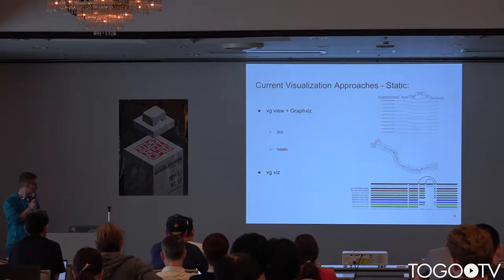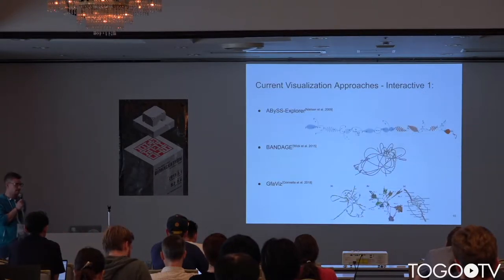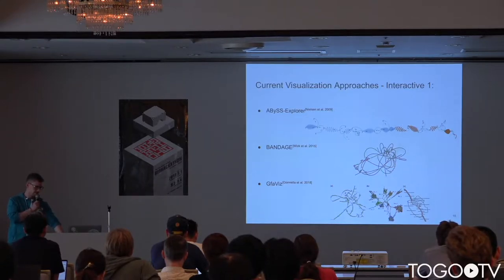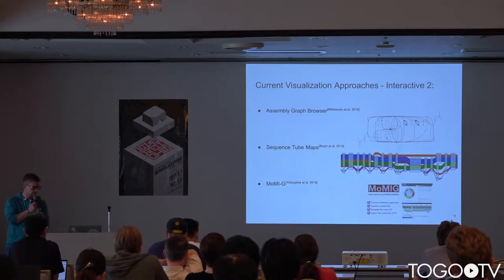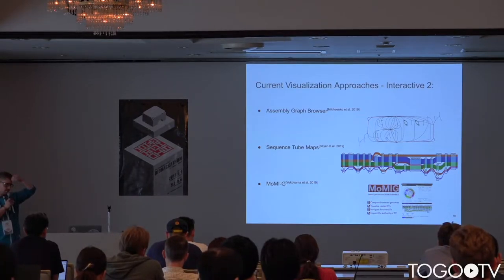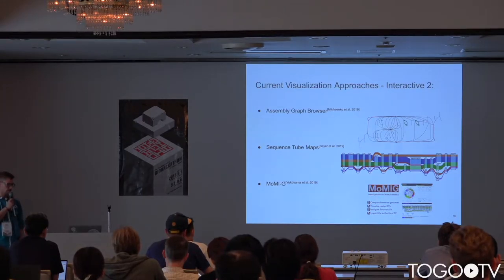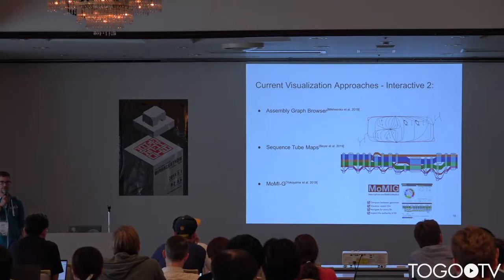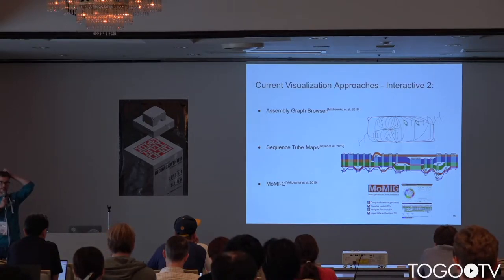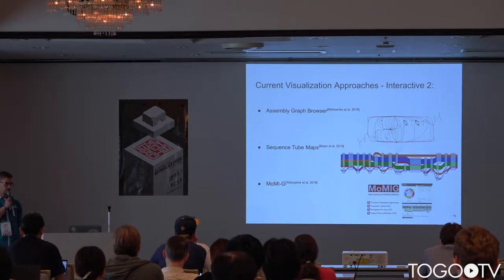Of course there are also interactive solutions, but most of them only accept assembly graphs, which does not really help us. There's the Ibis Explorer, Bandage, G of Avis, and assembly graph browser. In the meantime, sequence tube maps got published, but it still is a JavaScript library and not really an interactive browser. And Momiji actually uses sequence tube maps and extends it, providing several views, which is really nice, but because it uses sequence tube maps, it also shares some of its disadvantages. So I reached out to the community and found several other people like Josiah Siemen and Josh Yuki, and we decided to build a new GenoGraph browser.